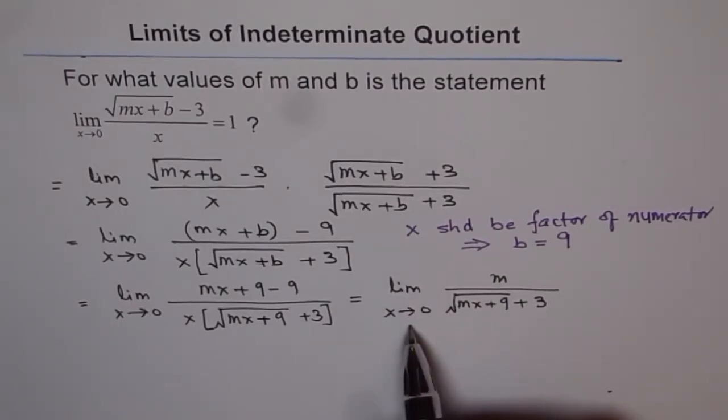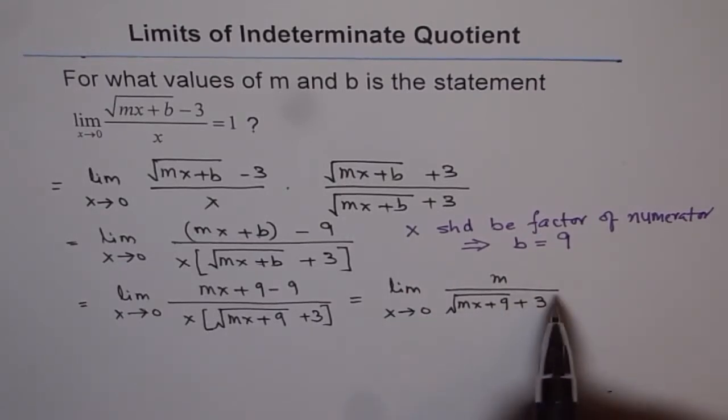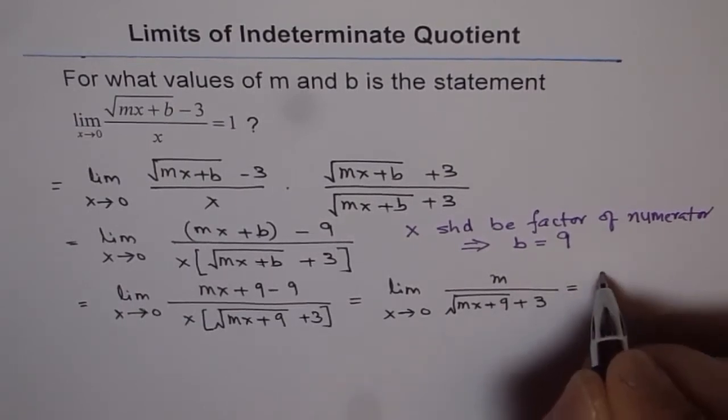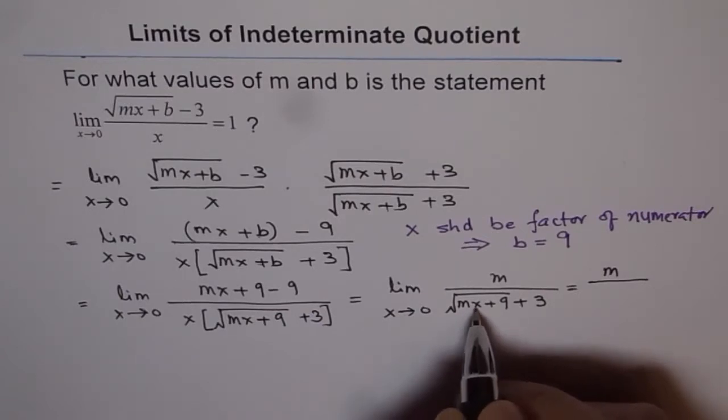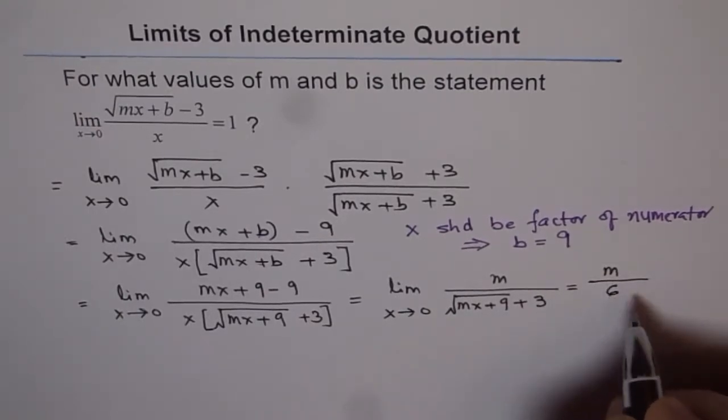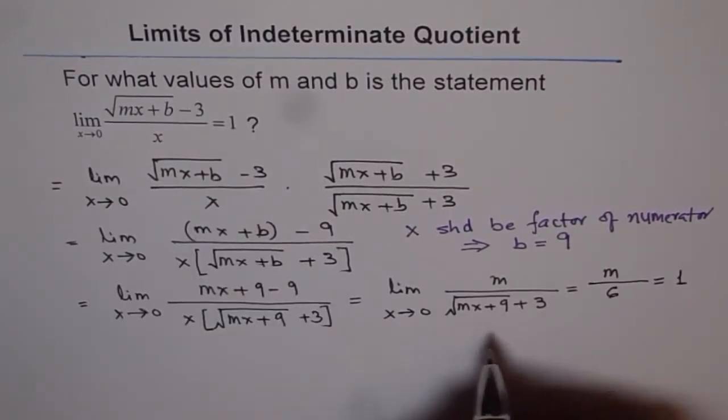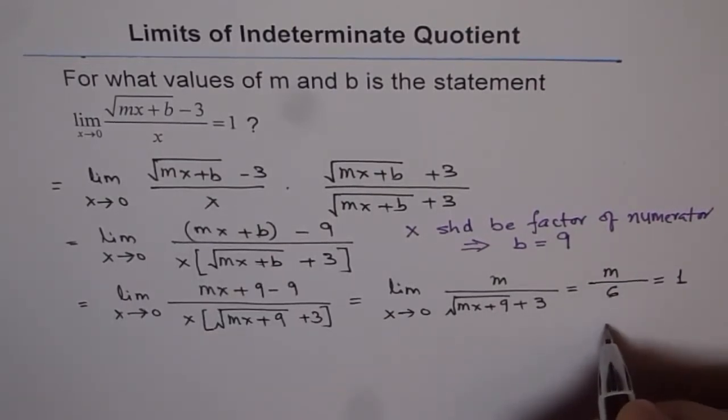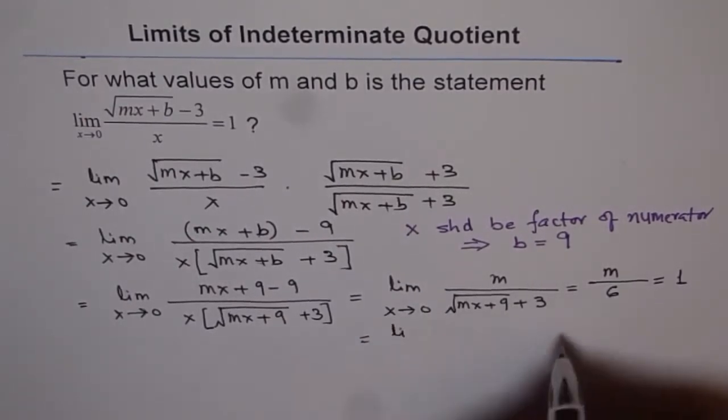Now, this limit is known to us, and the limit is 1. So when I substitute x equals to 0, I should get 1. That is, m divided by, when I substitute x as 0, this will be 0. And we get square root of 9. Square root of 9 is 3. And 3 plus 3 is 6. So we get m over 6 equals to 1. Since the limit is given as 1, that implies that m should be equal to, let me go here and give you the step more clearly.